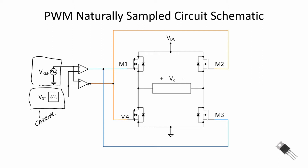Our carrier signal is either going to be a sawtooth waveform or a triangular shaped waveform. When our reference signal is greater than our carrier, the top comparator goes to high logic, which turns on M1 and M3, placing a positive voltage across our load. When our carrier exceeds the value of the reference, that goes to zero and we turn on M2 and M4, thereby reversing the polarity across our load and current flows in the opposite direction. That's the basic mode of operation.